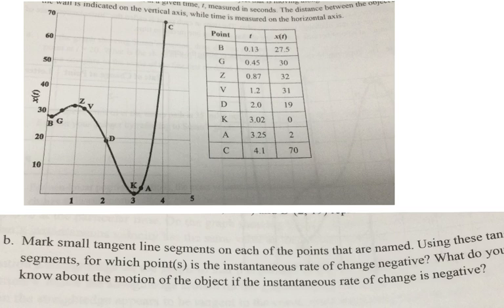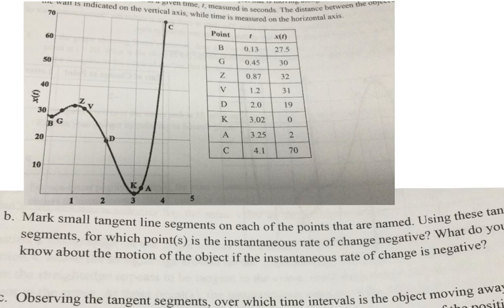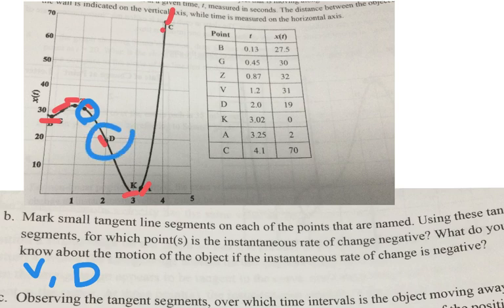Part B says, mark small tangent line segments on each of the points that are named. So B would have to be here, and then G, Z, F, D, K, A, and C, just in general. Some little small tangent line segments. Using these tangent segments, for which points is the instantaneous rate of change negative? So I'm looking for where the slope would be negative. That looks like I'm here at this point, which is V, and at D, we're also negative. So what is happening at those two points? What's happening to the motion? Well, remember, this is the distance away from the wall. So if the slope is negative, the distance away from the wall is getting less. So that means the object is moving towards the wall.